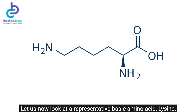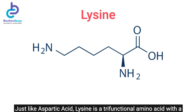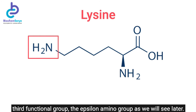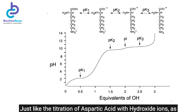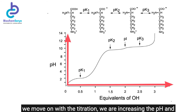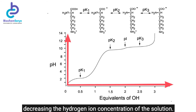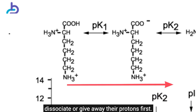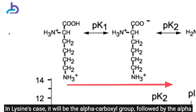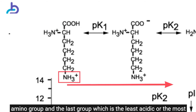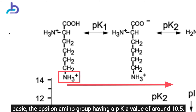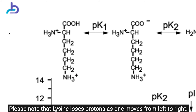Let us now look at our representative basic amino acid, lysine. Just like aspartic acid, lysine is a trifunctional amino acid with a third functional group — the epsilon-amino group. As we titrate with hydroxide ions, we increase pH and decrease hydrogen ion concentration, and the most acidic functional groups dissociate first. In lysine's case, it will be the alpha-carboxyl group first, followed by the alpha-amino group, and lastly the least acidic or most basic epsilon-amino group with a pKa of around 10.5.